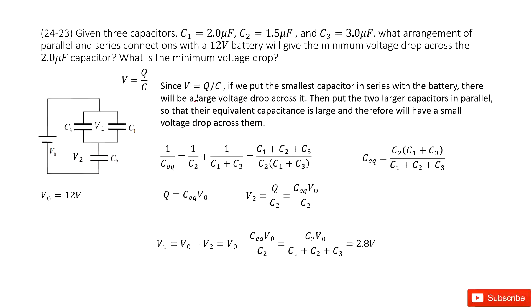In this system, we have three capacitors: C1, C2, and C3. We need to determine the arrangement of parallel and series connections with a 12V battery to get the minimum voltage drop across the two microfarad capacitor. We have C1, C2, C3, three capacitors, and we need to make C1's voltage drop a minimum. How can we consider that?